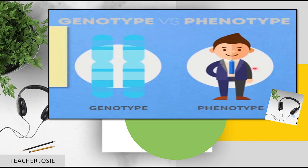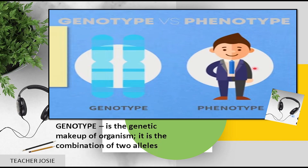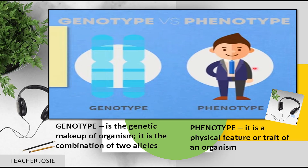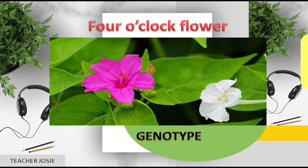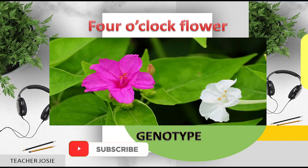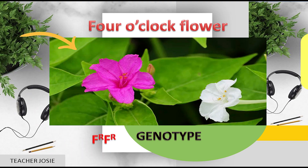Let us differentiate between genotype and phenotype. Genotype is the genetic makeup of an organism — it is the combination of two alleles. Let's have an example using 4 o'clock flowers. The genotype of the first flower is FRFR — the combination of the two alleles.